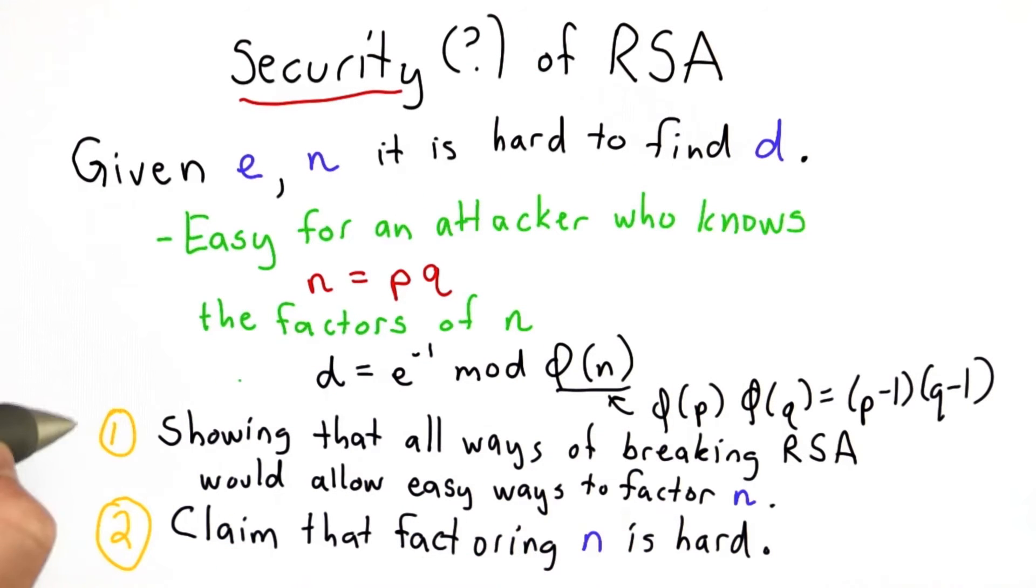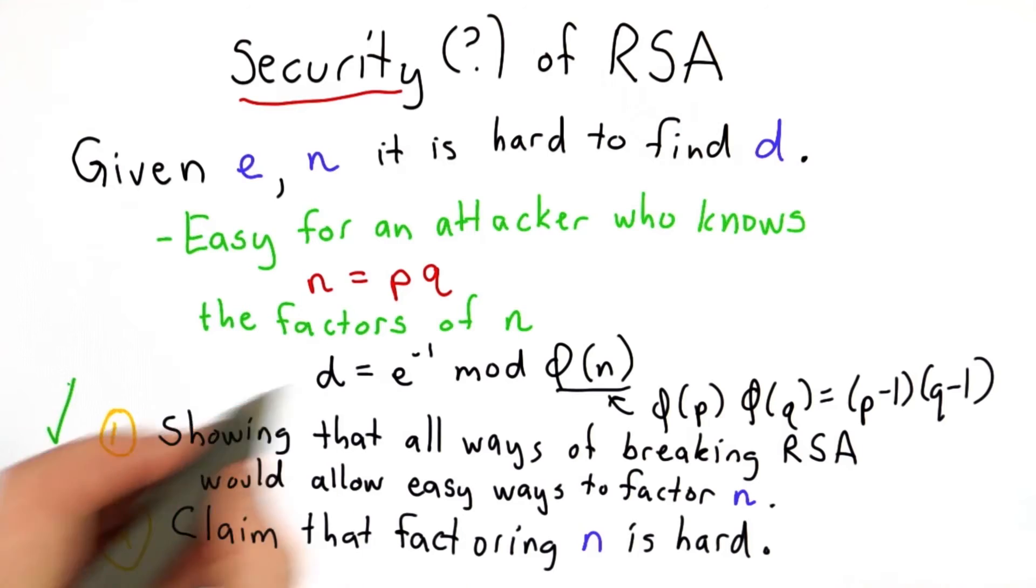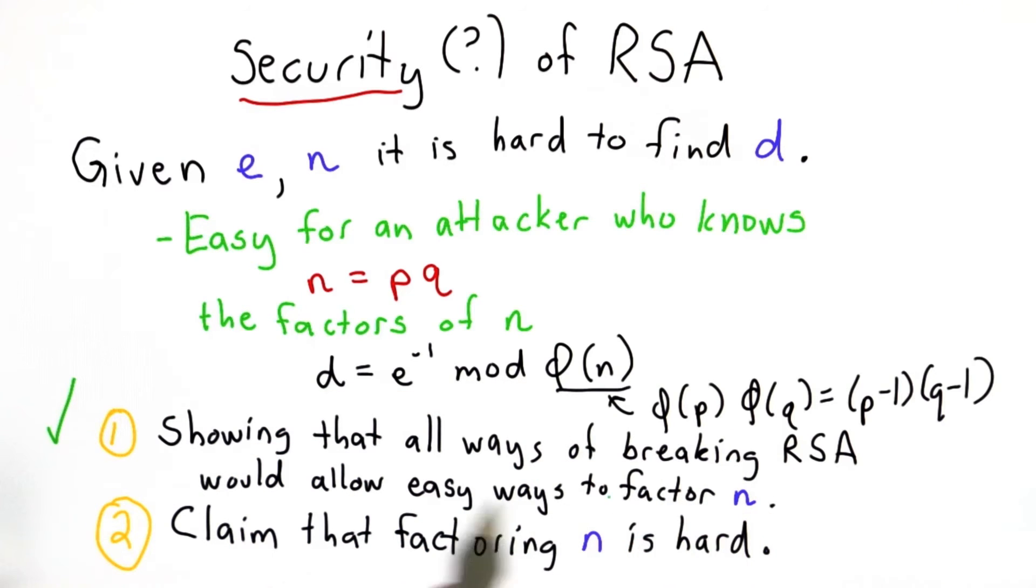We finished showing that at least all the obvious mathematical ways of breaking RSA would easily allow us to factor n. This certainly doesn't cover issues in implementation, or issues in weak choices of messages or keys.